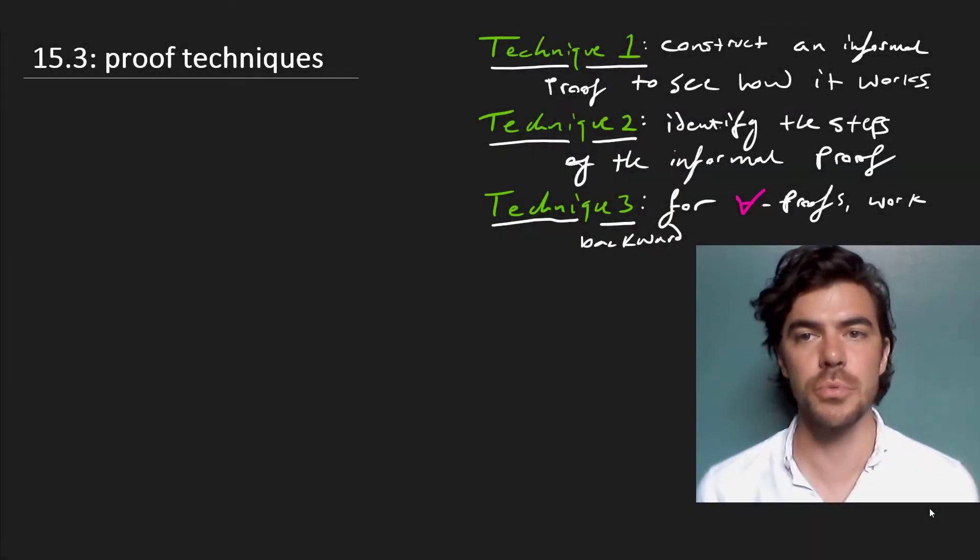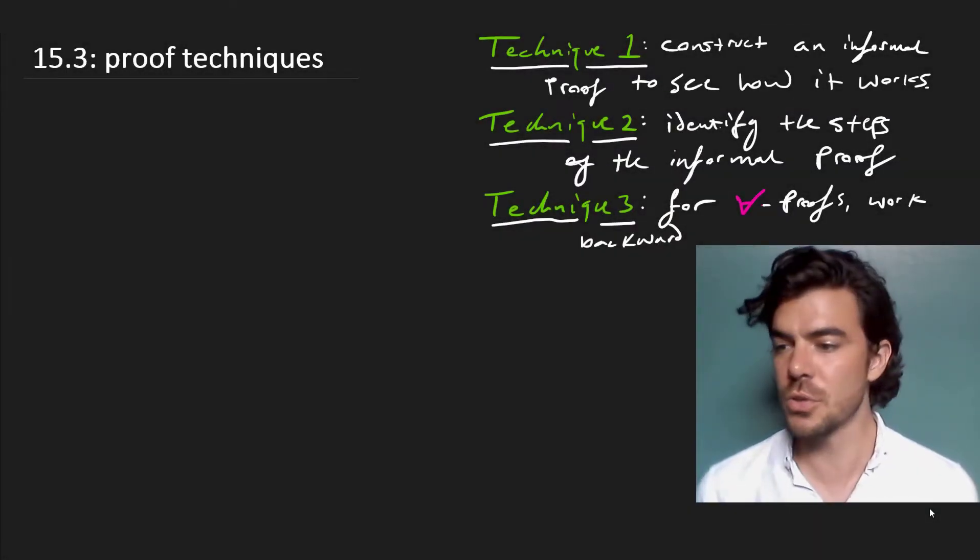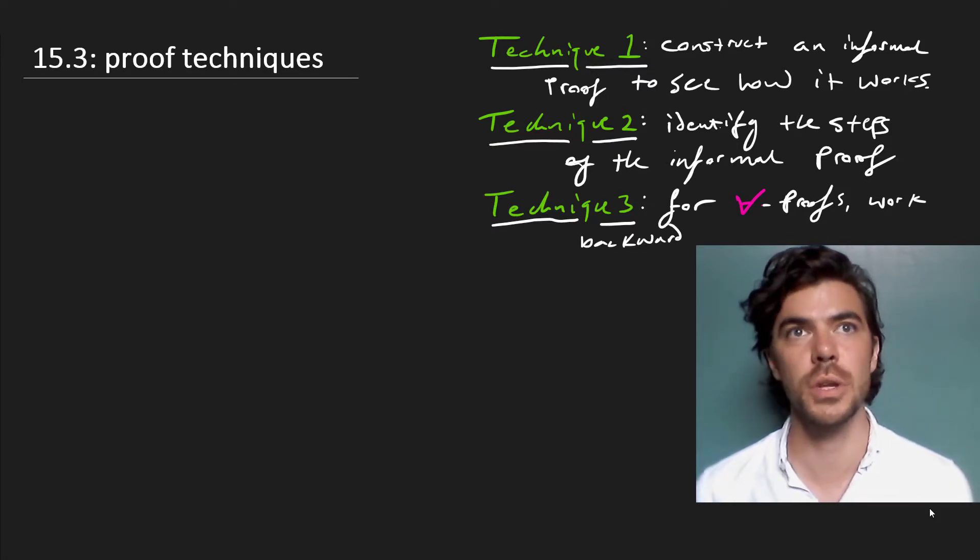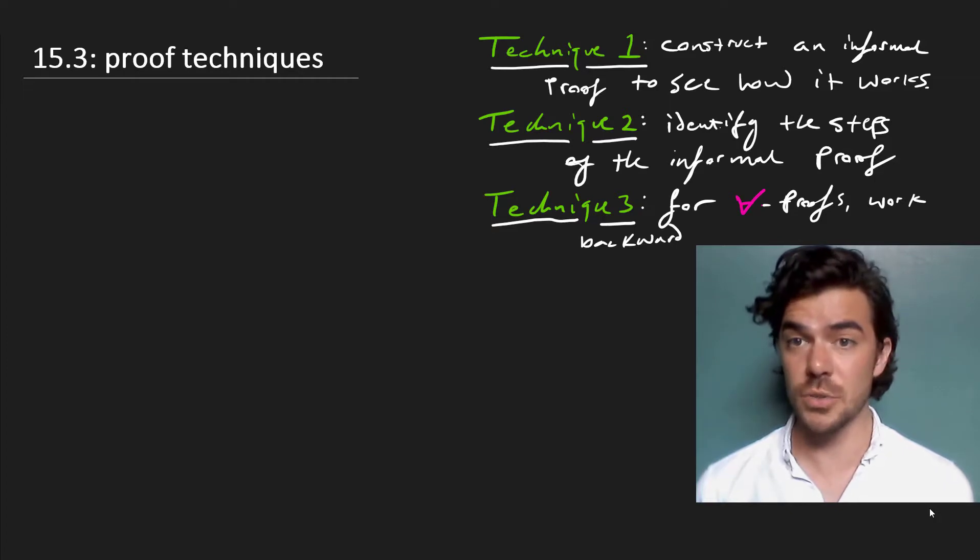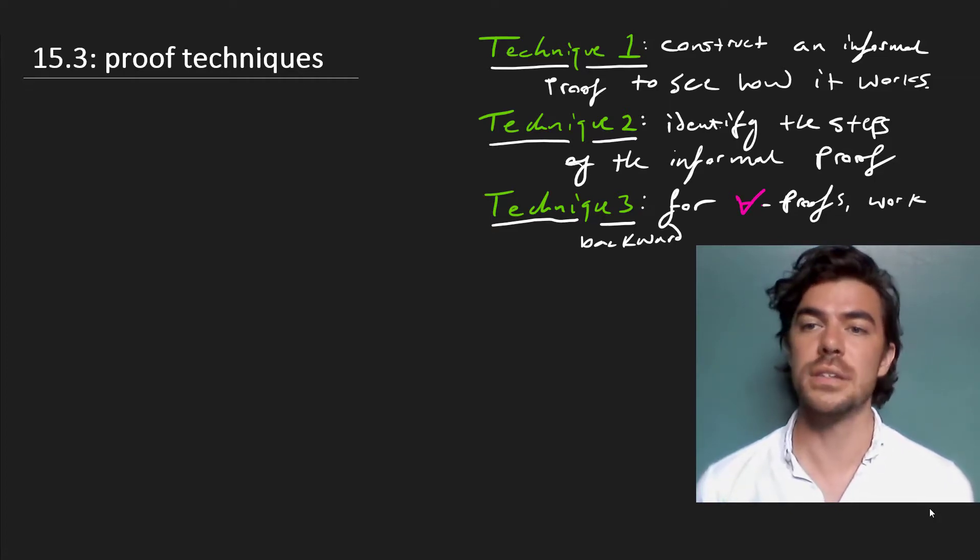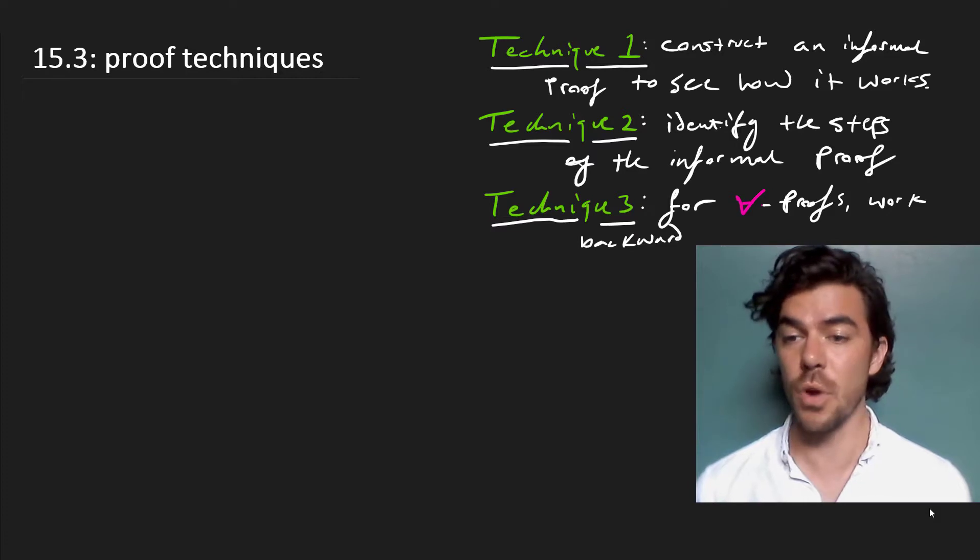Well, let's wrap this up by looking at some proof techniques which are generally useful for constructing proofs, especially when you find yourself feeling a little bit stuck. The first technique is to construct an informal proof just to see how the proof works. Often this is a matter of convincing yourself that the argument really does work, and it helps to see the kinds of steps you're going to use when you construct the formal proof for it, and that's technique two.